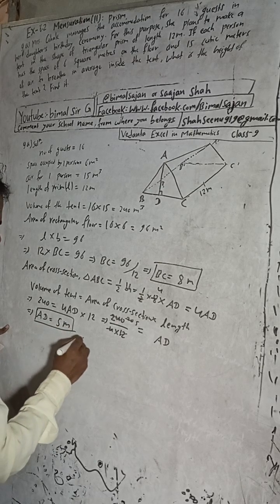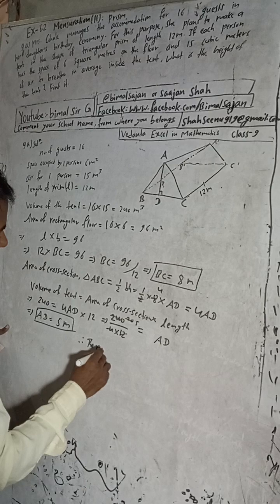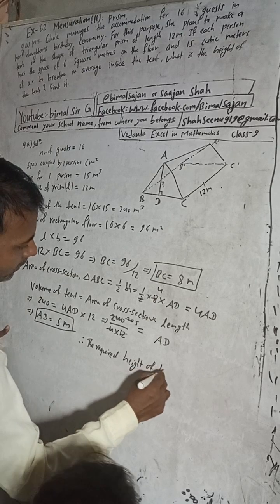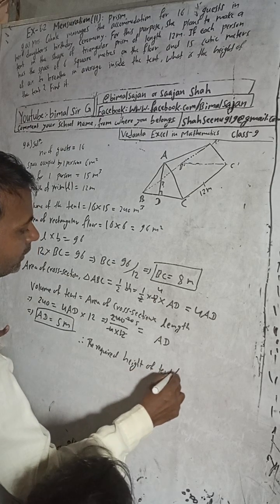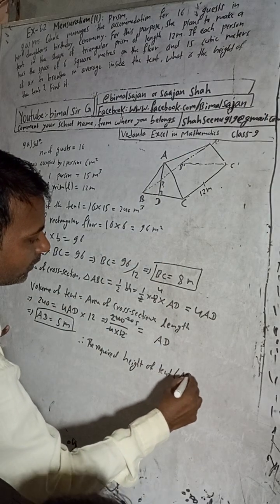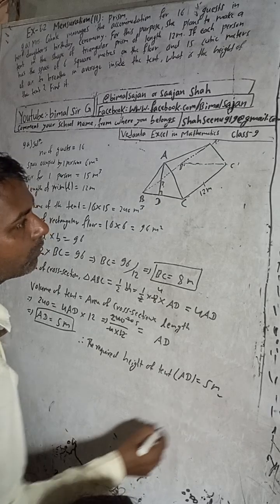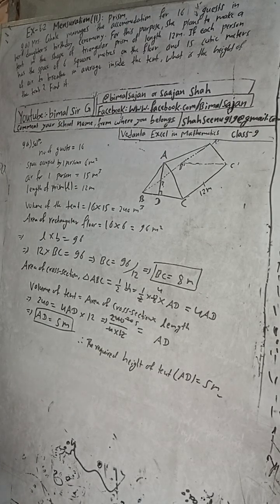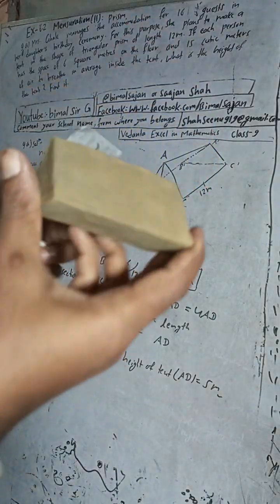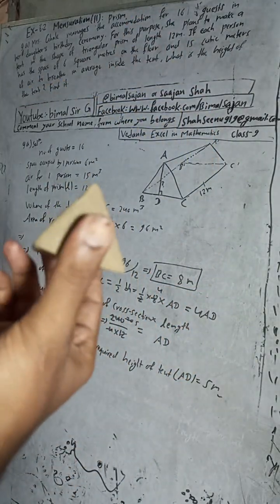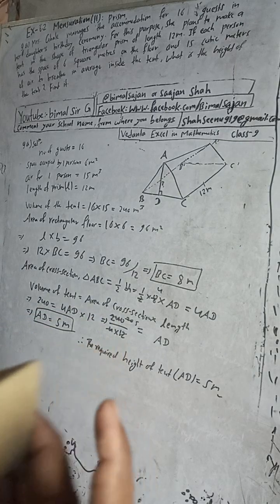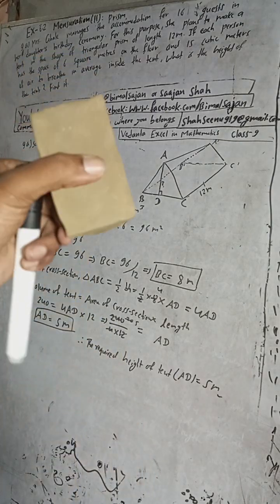The height of the tent is 5 meters. So dear students, I solved this question with the demonstration of the triangular prism model, so that we can understand the shape clearly.